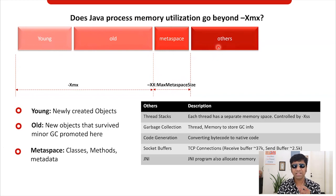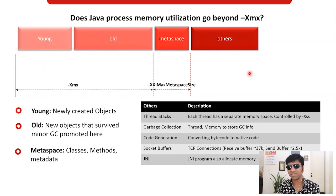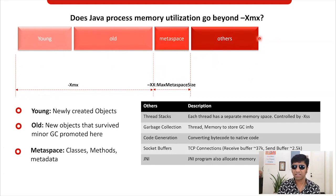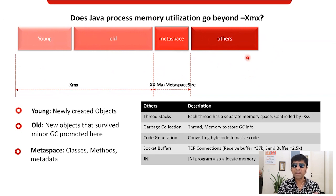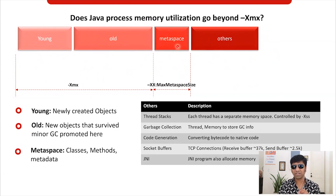So friends, when you actually set XMX, you are only setting two important regions of the JVM: the old generation and young generation. But beyond that, there is metaspace and there is this others region. Engineers ask me whether there is any one system property that can govern the size of this others region. Unfortunately, there is no one such property. Typically, you can use a rule of thumb: 80 percent of the memory will be taken by the young generation and the old generation. The remaining 20 percent, you want to keep for metaspace and the others region.